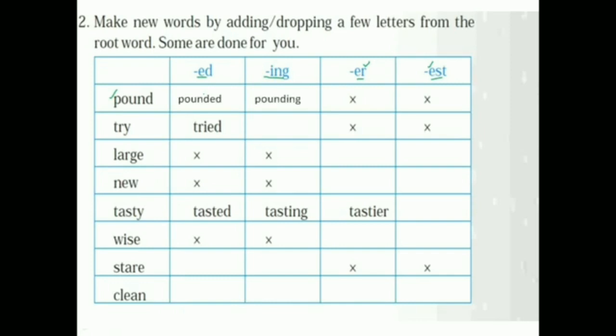First one, pound. So you have to add ed, then you will get pounded. Then the second one, add ing, pounding, you will get pounding. There is no er and est word. Pounder, poundest, there is no like that word. So next one is try. Last word is y, so y have to change into i. So i-e-d means tried. Next one, trying.